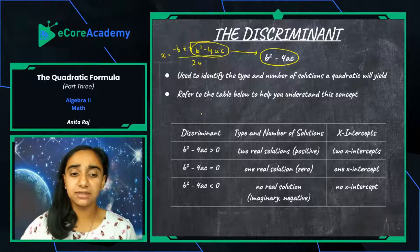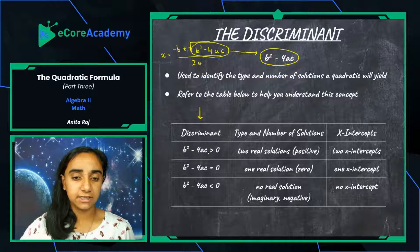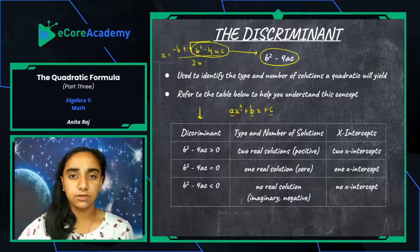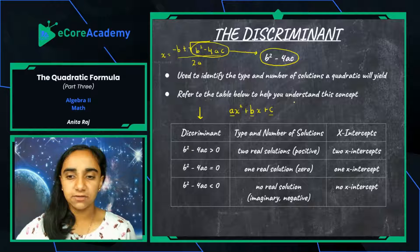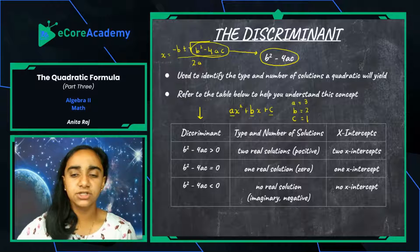In this column it says 'discriminant' — you can see b squared minus 4ac written out. You're going to take your standard form ax squared plus bx plus c and take the a, b, and c values, which are constants when you have an actual quadratic equation, and plug them into b squared minus 4ac. For example, if a equals 3, b equals 2, and c equals 1, you would have 2 squared minus 4 times 3 times 1.